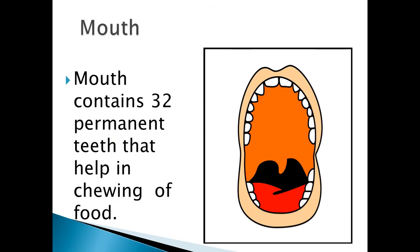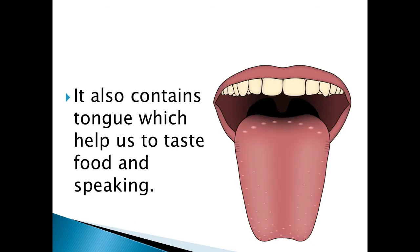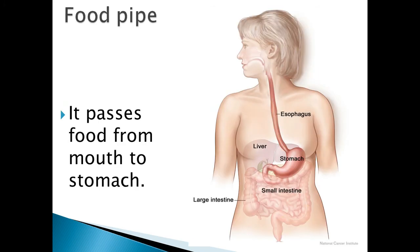Mouth. This is the first part of the digestive system. Mouth contains 32 permanent teeth that help in chewing up food. Mouth also contains one tongue which helps us to taste different types of food and in the process of speaking also. Food pipe: from mouth, food passes into the food pipe, that is also called esophagus.